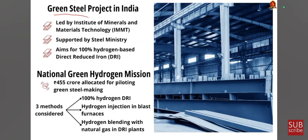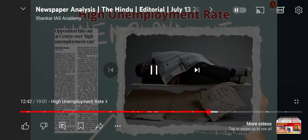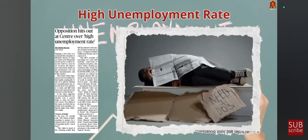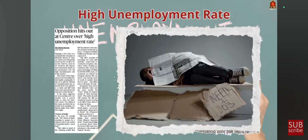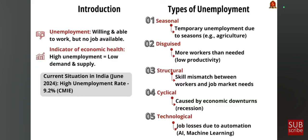The green steel project in India is led by the Institute of Minerals and Material Technology (IMMT), supported by the Ministry of Steel. Now moving to unemployment — understanding statistics and data related to unemployment rate in India is very handy for eliminating or assessing options in MCQs. Unemployment is defined as being willing and able to work but having no jobs available. High unemployment can be equated to low demand and supply. The current situation in India as of June 2024 is a high unemployment rate of around 9.2% according to the CMIE report.